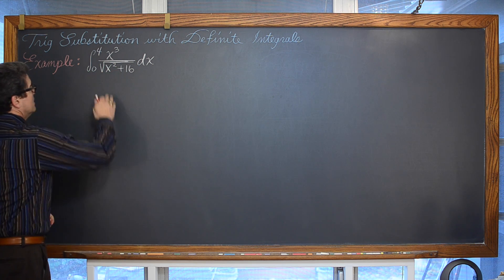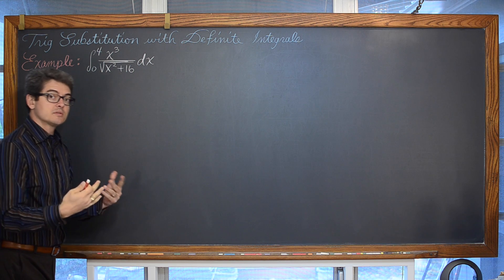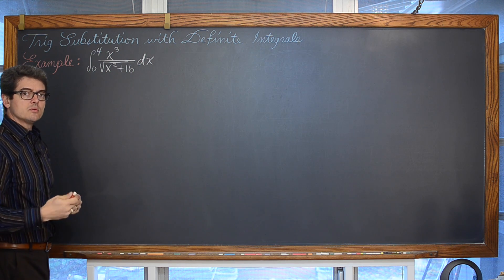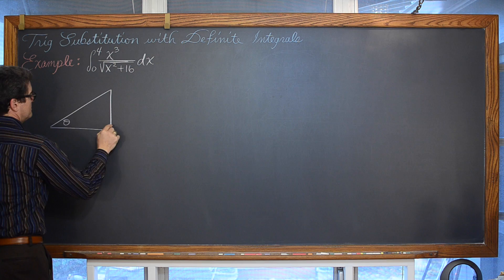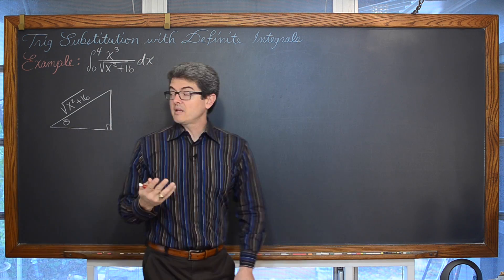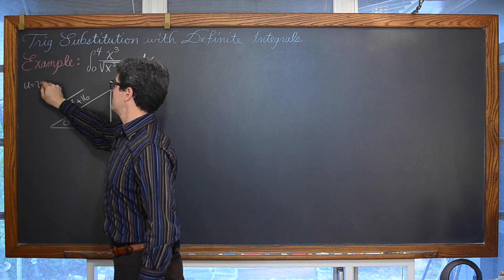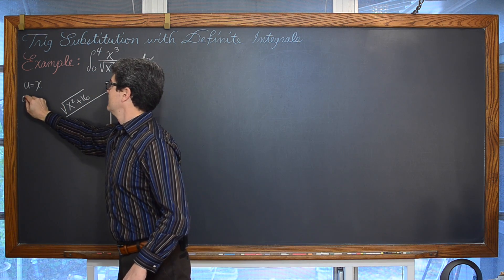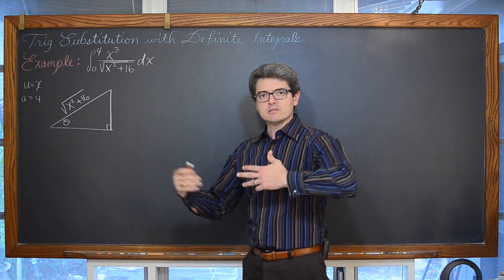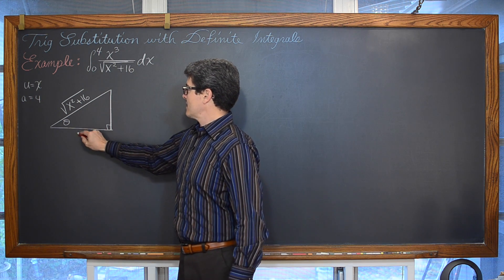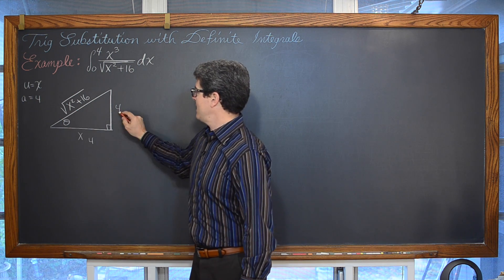We have in our denominator a square root of x² + 16. By the Pythagorean theorem, a² + b² = c², the hypotenuse would be c = √(a² + b²). So this expression is going to be the hypotenuse of our right triangle. From this expression, u is going to equal x (the square root of x²), and a is going to equal the square root of 16, which is just 4. Now where do you put x and 4 — do we put x in the opposite leg and 4 in the adjacent leg?